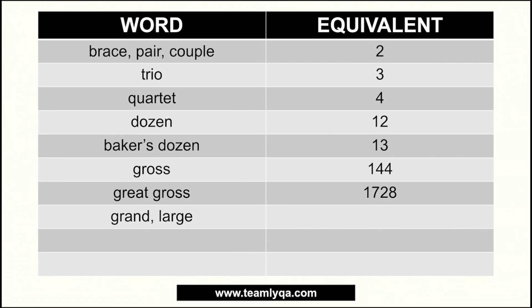Next is 'grand' or 'large.' When you say ten grand or ten large, this is a bit on the slang side, but the equivalent is one thousand. It's like the Filipino 'bulig' used by Mayor Isco — one bulig, three bulig. One bulig is one thousand. That's grand or large.